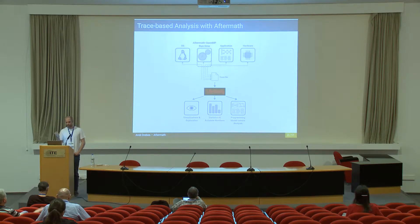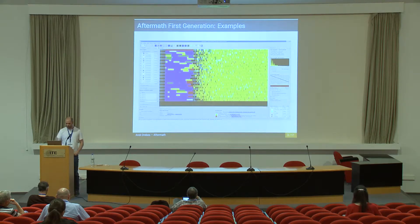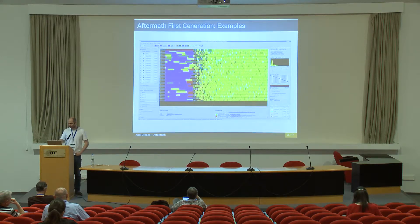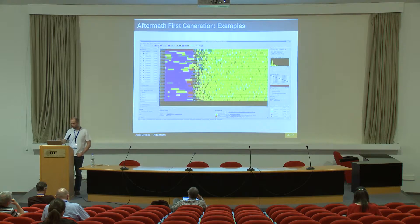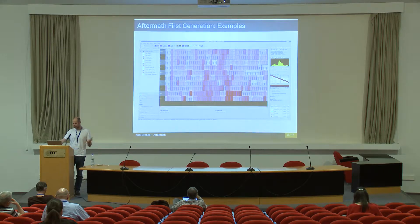We built a tool for this for OpenMP and OpenStream, which is still called Aftermath, and it looked like this. You have the central timeline component that shows you the activity over time. On the right side you have statistical counters and information about what's going on in the hardware — for example data exchanges between NUMA nodes. You have filters and various things you can use interactively, various views like heat maps that show you where slow tasks are located, and you could plot hardware performance counters on top of that. There were many views and many things you could do with the tool.